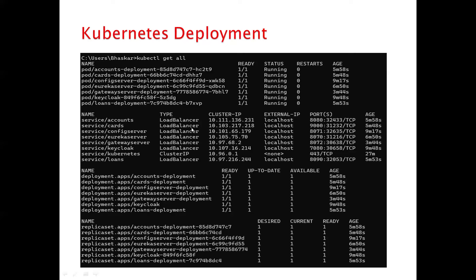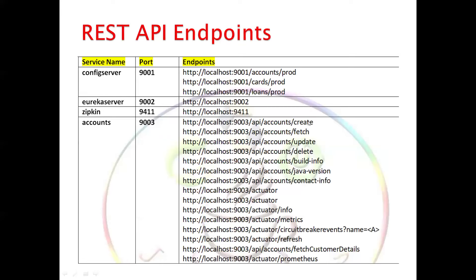For Kubernetes deployment, we'll cover pods, services, deployments, replica sets, load balancers, cluster IPs, and how to access your APIs. We'll discuss Kubernetes concepts in two to three hours — not a full Kubernetes course, but developer-level topics required for our microservices deployment. Port numbers can be configured; config server, Eureka server, Zipkin, and individual microservices will each run on different port numbers starting from 9000.